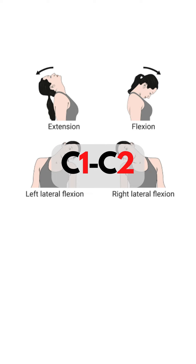C1 and C2: if we trace the spine and the flexion of the neck, it resembles a 1 for C1. And if we trace the curve of the extended head in relation to the spine, we will have a 2 for C2.